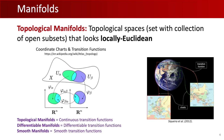We can map two coordinate charts to each other using transition functions, and based on the properties these functions have, we get different types of manifolds. In a topological manifold these functions are continuous; in CK differentiable manifolds they are CK differentiable; and in smooth manifolds they are infinitely differentiable. These transition functions allow us to do calculus on manifolds — the more structure they have, the easier it is.